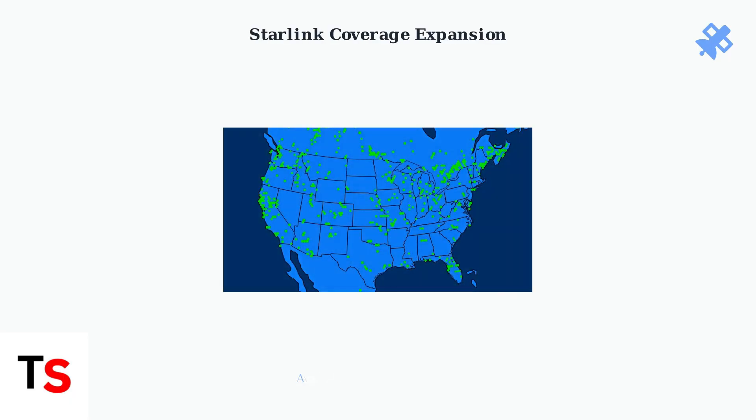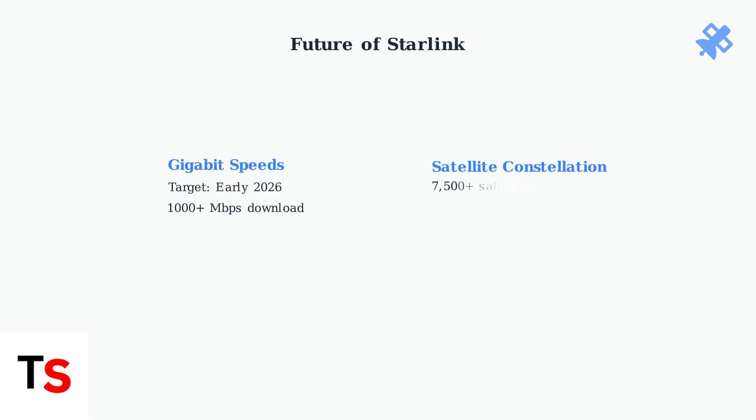Starlink's coverage continues to expand across North America. The service is now available in over 30 U.S. states, with particularly strong coverage along coastal areas and major population centers. Looking ahead, Starlink has ambitious plans for the future. The company aims to achieve gigabit Internet speeds by early 2026, which would represent a significant leap in satellite Internet performance.